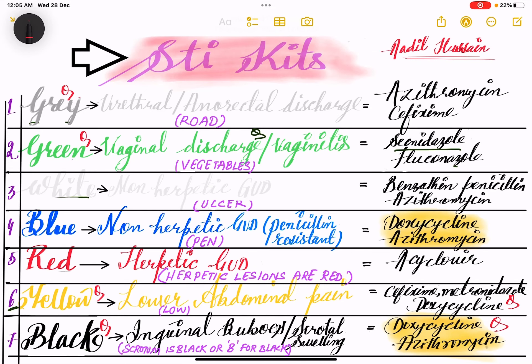Today I am going to talk about a very important topic: STI kits. There are seven kits. The first one is gray, second is green, third is white — remember W looks like a three, so white is kit number three. Blue contains four alphabets so it becomes kit number four. Red is kit number five. Yellow contains six alphabets so it becomes kit number six. Black is kit number seven.